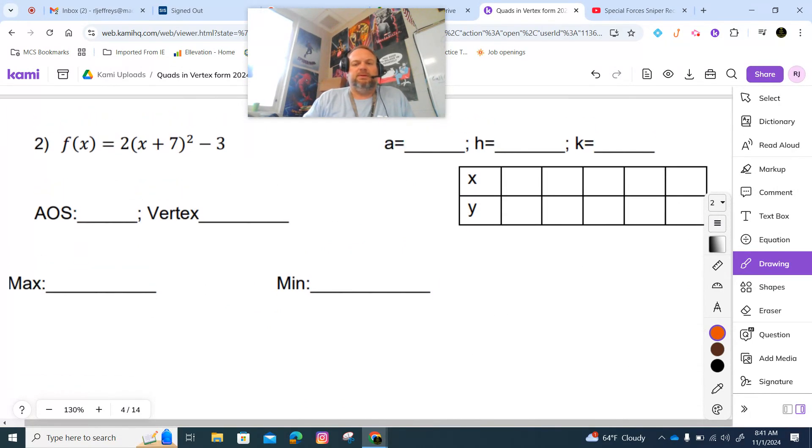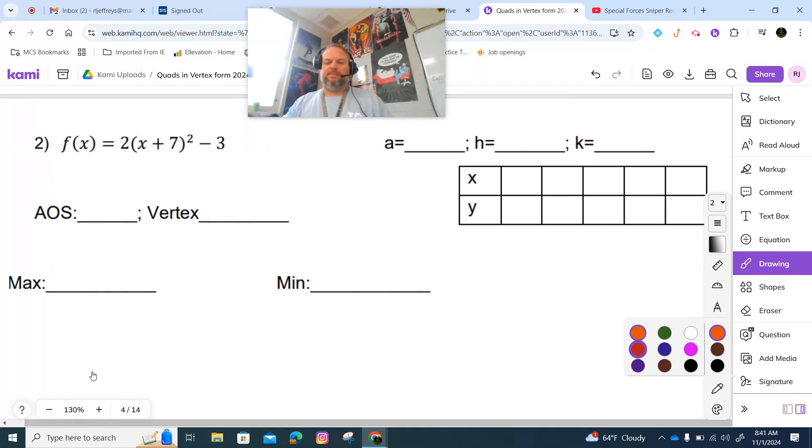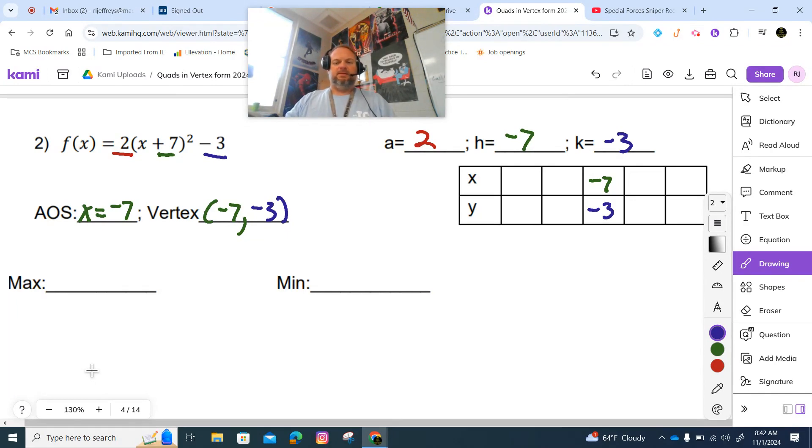This one looks different than the other one - the formatting got off. Our a is 2, our h would be negative 7, our k is negative 3. Our a is positive so that means our max is infinity and our min is our vertex.